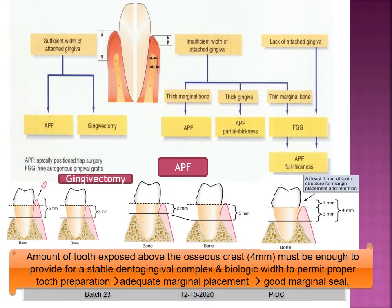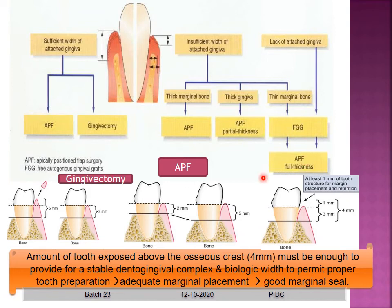The crown lengthening procedures are selected as follows: if there is sufficient width of attached gingiva but the crown needs lengthening, an apically positioned flap or gingivectomy is used. If there is insufficient width of attached gingiva with thick marginal bone, go for apically positioned flap. If the gingiva is thick, go for APF partial thickness. If thin along with loss of attached gingiva, go for free gingival graft with full-thickness apically positioned flap. It is recommended that at least 4 mm of tooth be exposed above the osseous crest for a stable biologic width to permit good tooth preparation and adequate marginal placement.